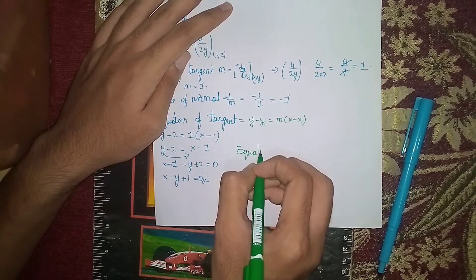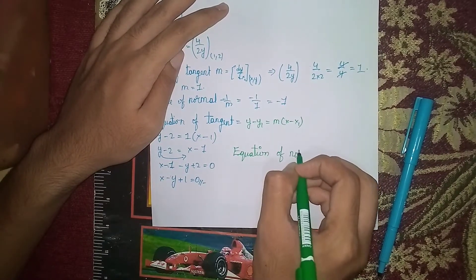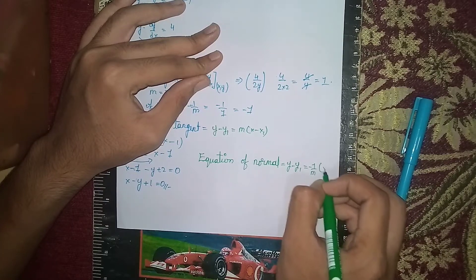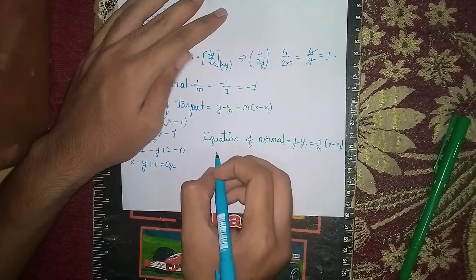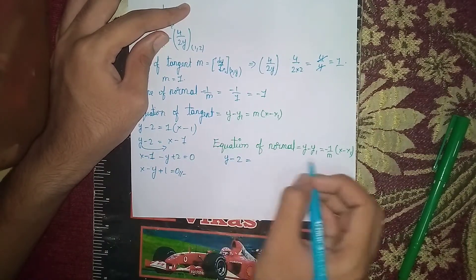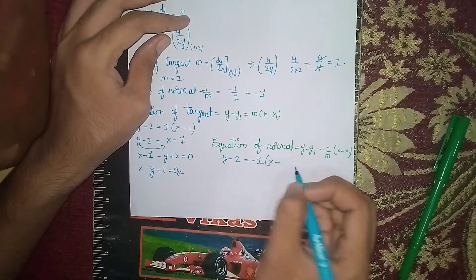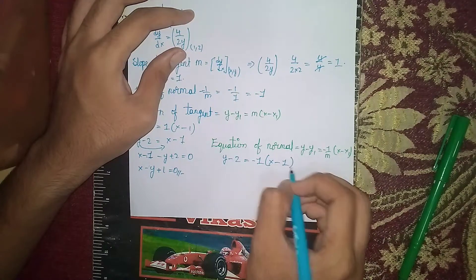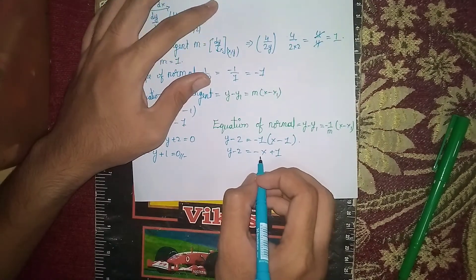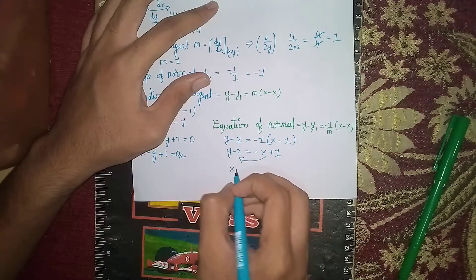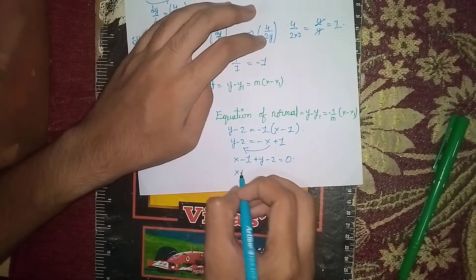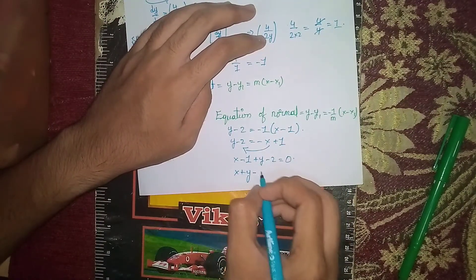Equation of normal: the formula is y minus y₁ equals minus 1 by m times (x minus x₁). Here y₁ equals 2, x₁ equals 1, and minus 1 by m equals minus 1. So y minus 2 equals minus 1 times (x minus 1), giving y minus 2 equals minus x plus 1. Rearranging: x plus y minus 3 equals 0. This is the equation of the normal.